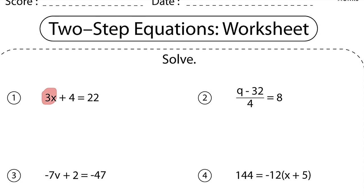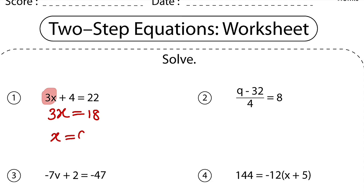As simple as that. And that number must be 18. So you take the whole of this 3x, you set it to be equal to 18. And you know that the relationship between 3 and x is multiplication. So you need to ask yourself again, what can I multiply by 3 to get 18? Definitely 6. So the answer is 6. This is how to solve two-step equations.